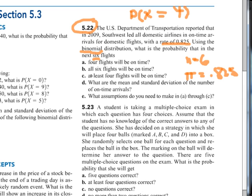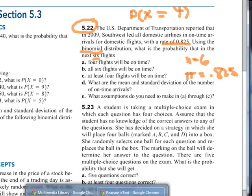C asks, what's the probability that at least four flights will be on time? Now in this case, we're going to have to use probability chart.